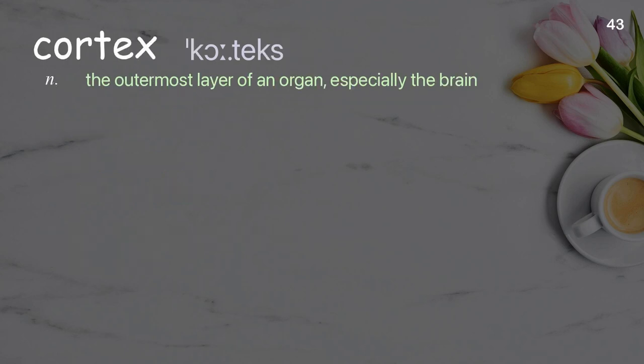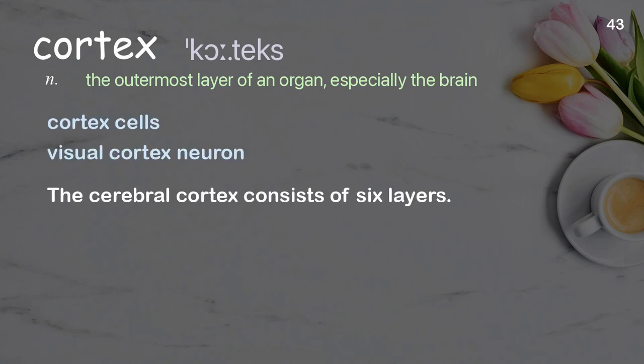Cortex: the outermost layer of an organ, especially the brain. Examples: cortex cells, visual cortex neuron. The cerebral cortex consists of six layers.